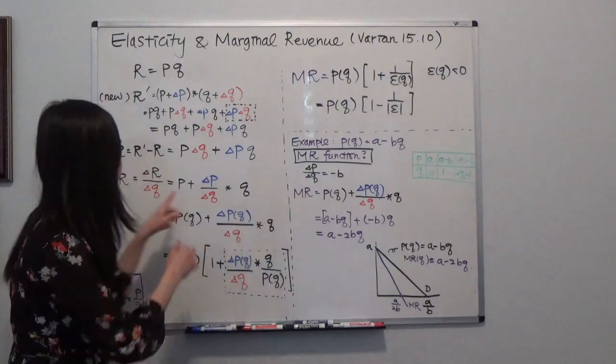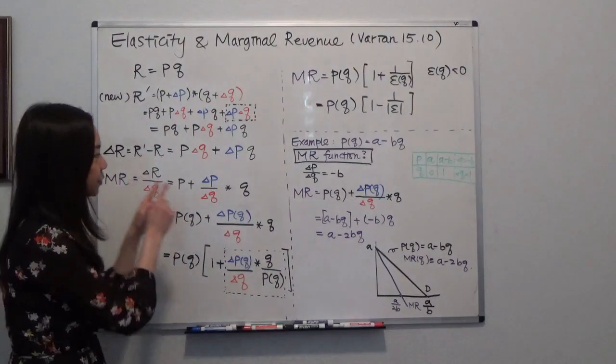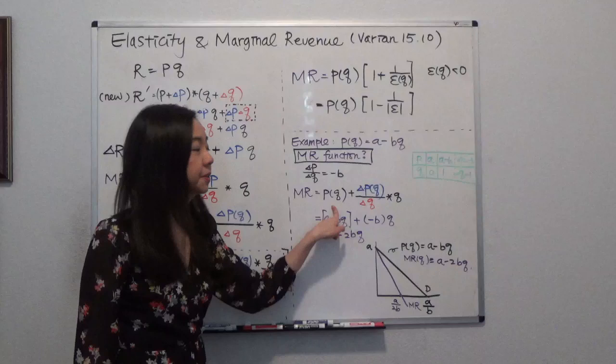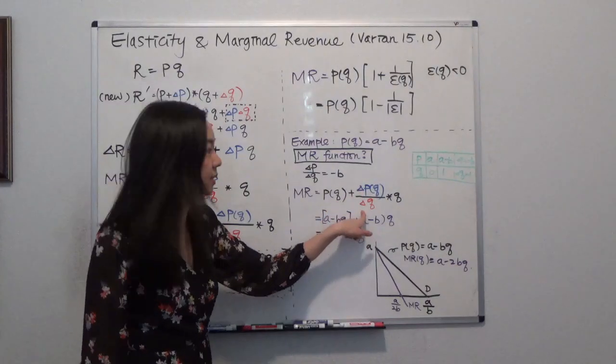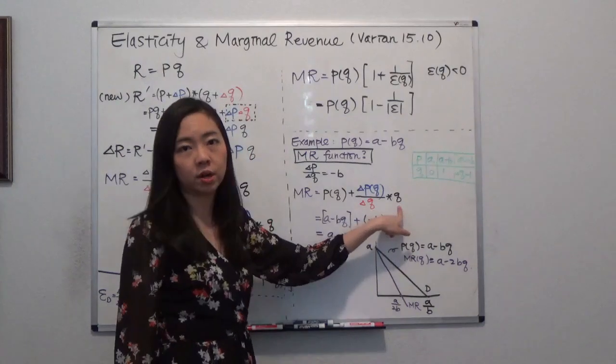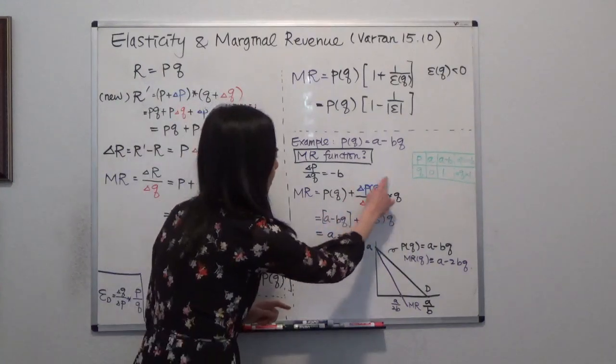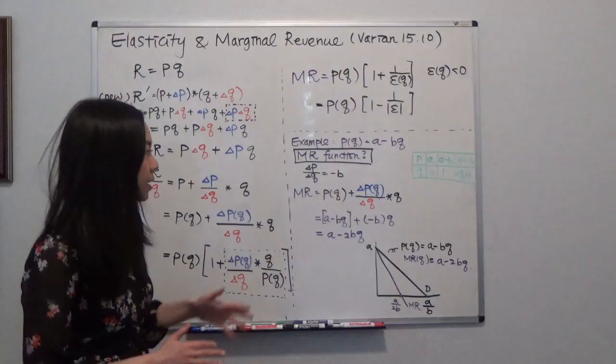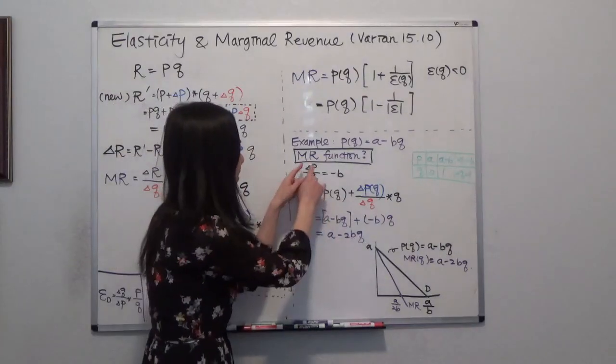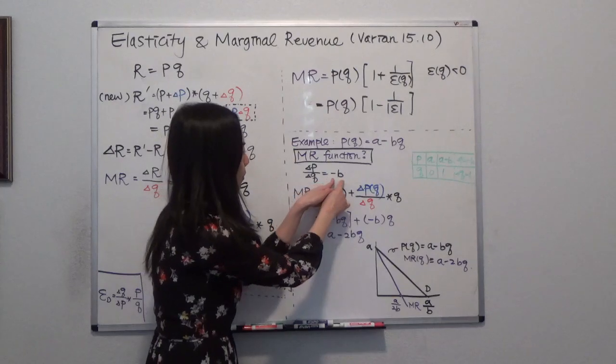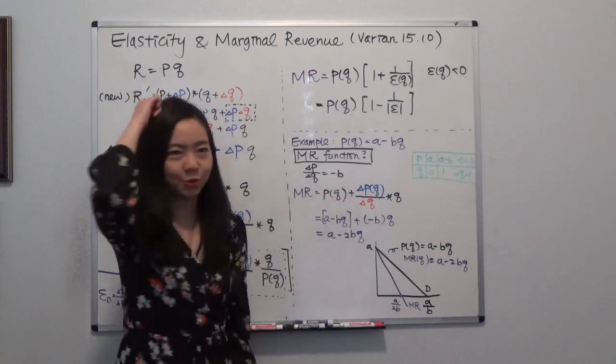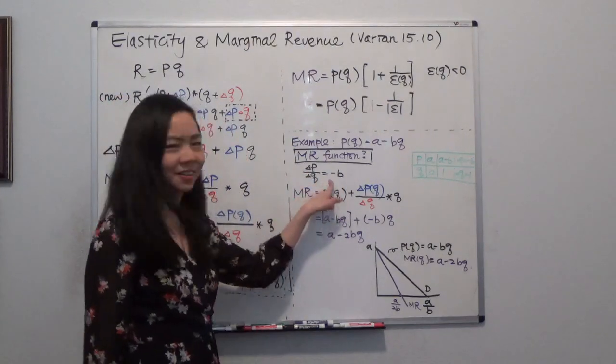We know that from here, your marginal revenue is equal to price plus changing price divided by changing quantity times the quantity. So what is this term? Now, in the textbook, very, very quickly told you that delta P divided by delta Q is exactly equal to negative b. And then you scratch your head. How did you get this, right?